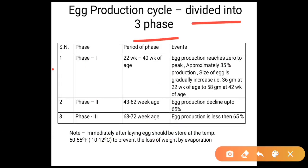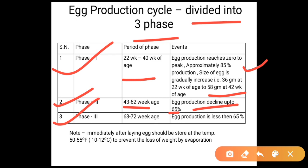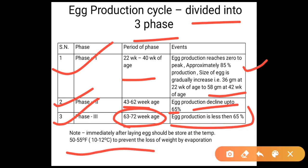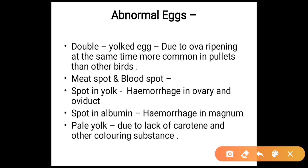The egg production cycle is divided into three phases. Phase 1 (22–40 weeks): production rises from 0 to peak of approximately 85%; egg size gradually increases from 36 grams at 22 weeks to 52–58 grams at 42 weeks. Phase 2 (43–62 weeks): egg production declines to about 65%. Phase 3 (63–72 weeks): production is less than 65%. Immediately after laying, eggs should be stored at 55°F (10–12°C) to prevent loss of weight by evaporation.